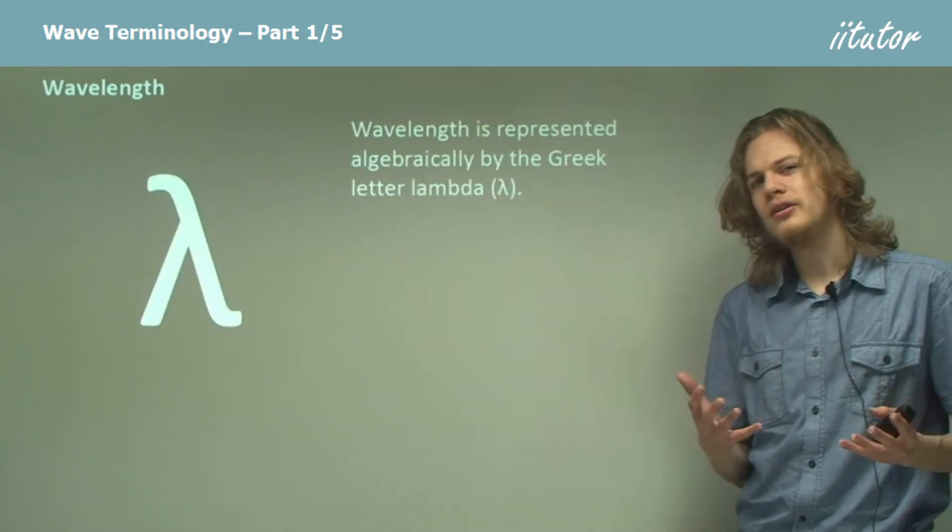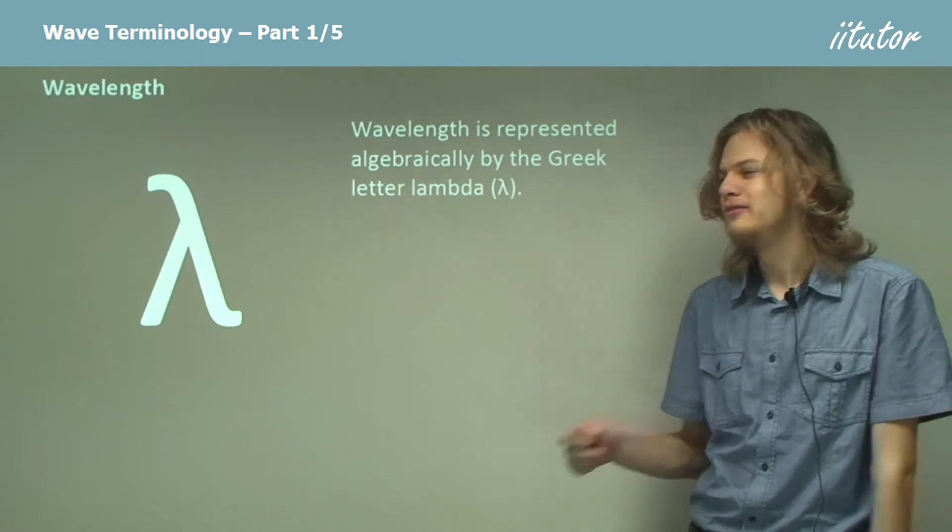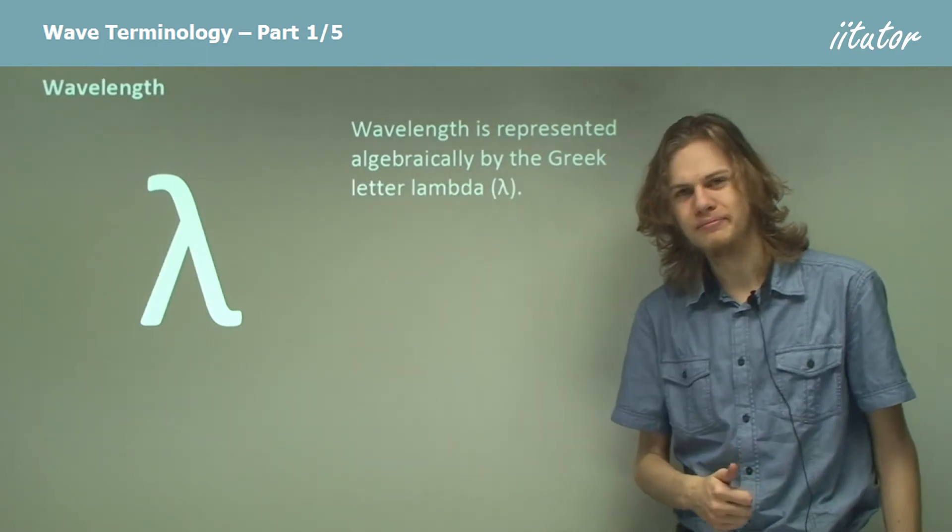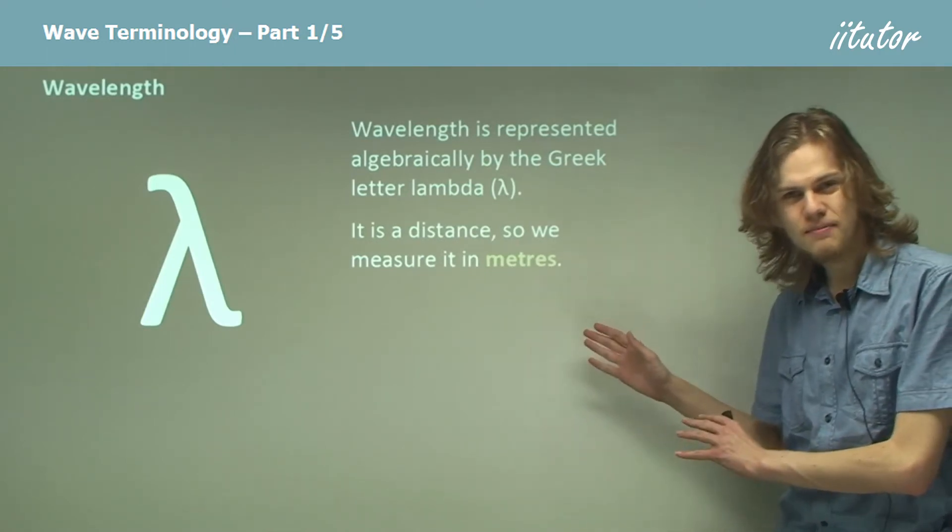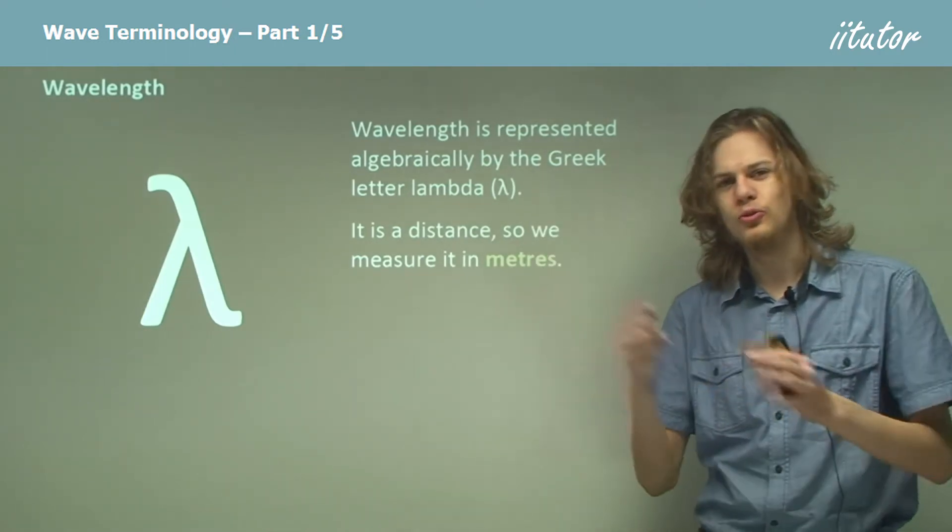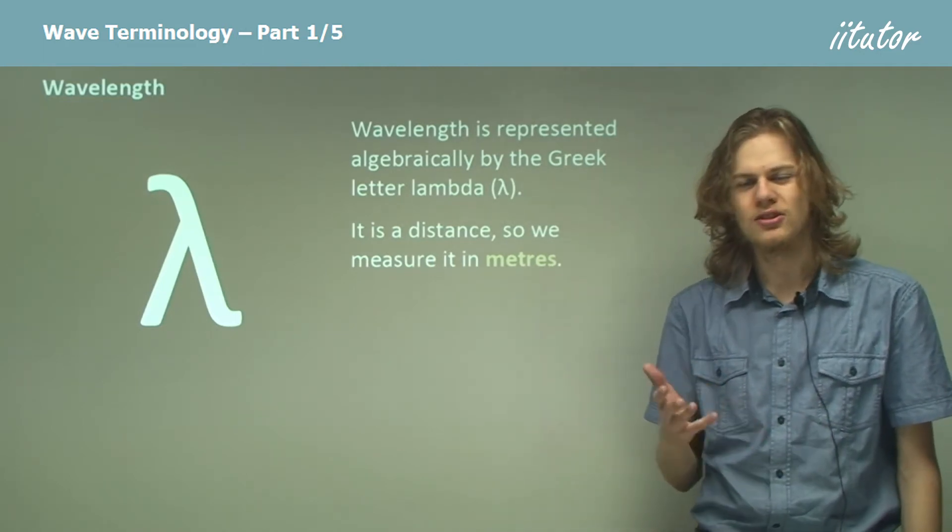How do we write this down with algebra? The answer is with this Greek letter called lambda. Wavelength is a distance, the distance between two repeating parts of the wave, and so we measure it in meters, the SI unit for distance.